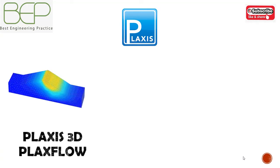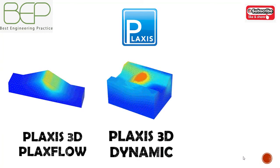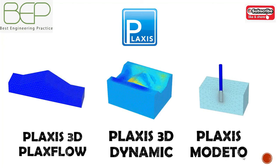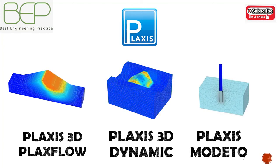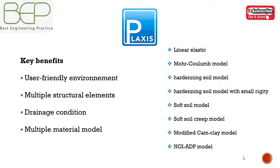The modules of Plaxis 3D include Plaxis 3D Flow for flow analysis and Plaxis 3D Dynamics for dynamic analysis. Plaxis Model 2 is based on Plaxis 3D but is specialized for micropiles. The key benefits of Plaxis are a user-friendly environment, multiple structural elements, drainage conditions, and multiple material models including: linear elastic, Mohr-Coulomb model, hardening soil model, hardening soil with small strain rigidity model, soft soil model, soft soil creep model, modified Cam Clay model, and NGI ADP model.